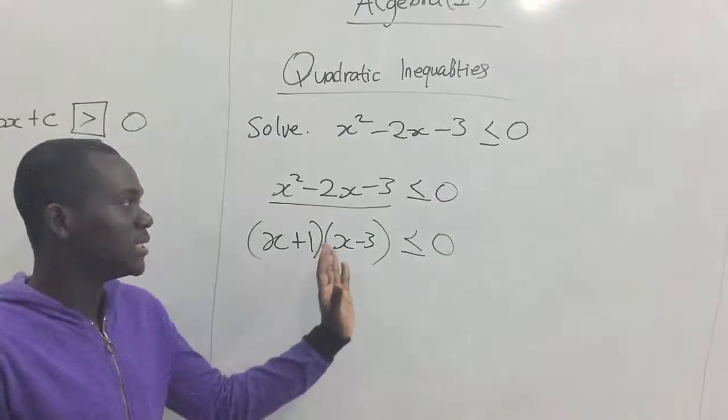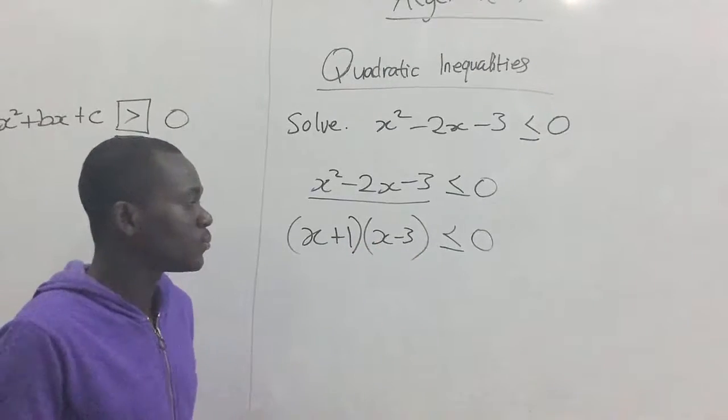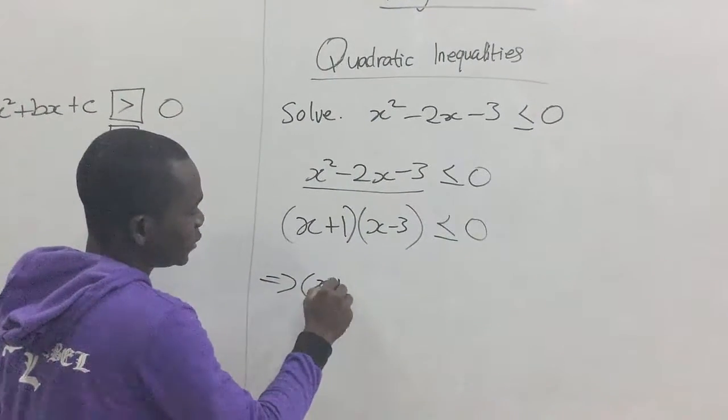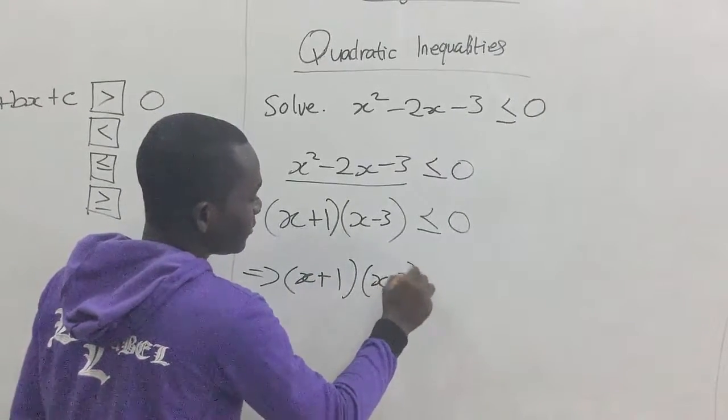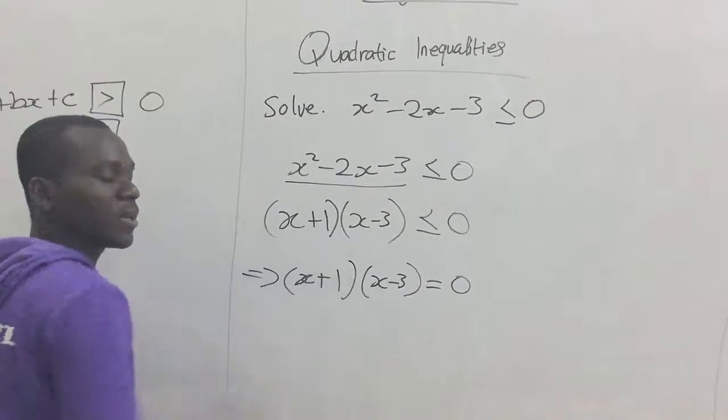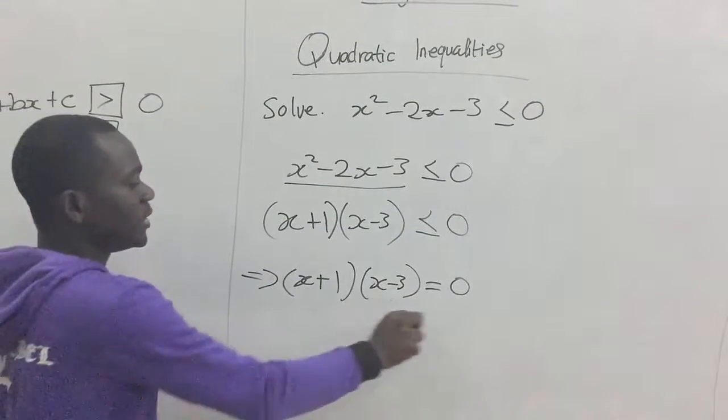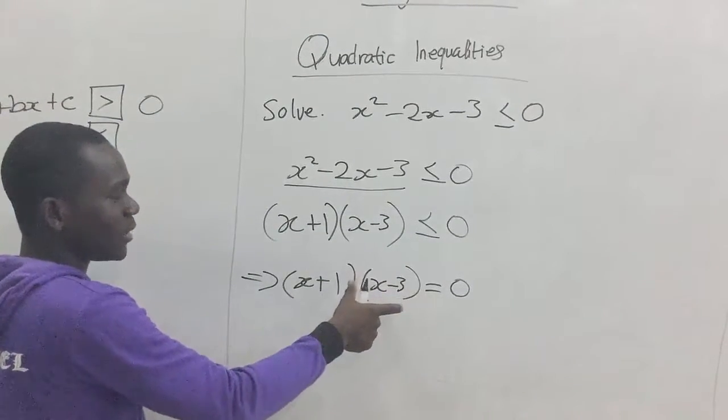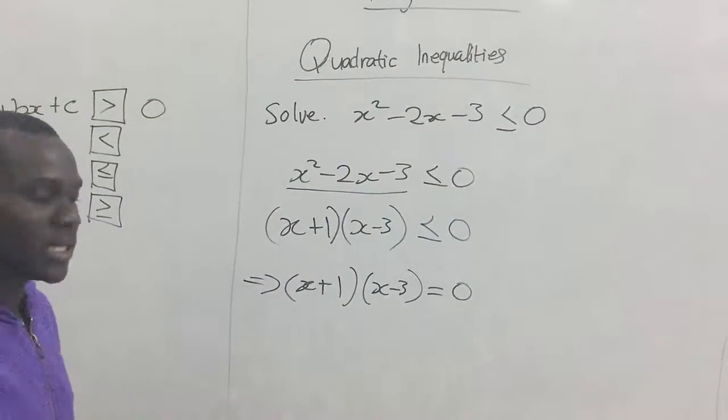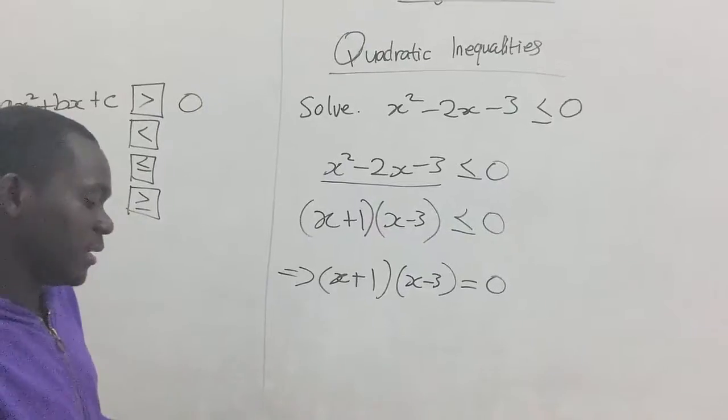Assuming we are equating these factors to zero, that is x plus 1, x minus 3, being equal to zero. Let's plot a graph of this relation. Even though it isn't part of the inequality, but this one helps to get the graph of the quadratic relation here.